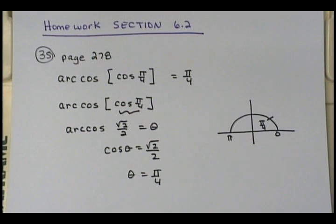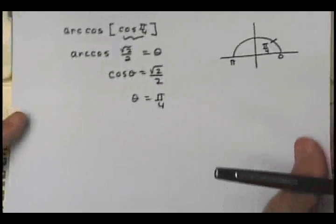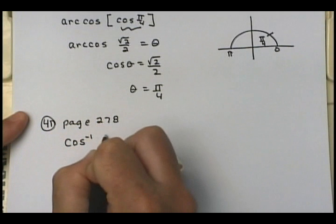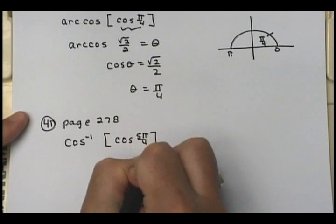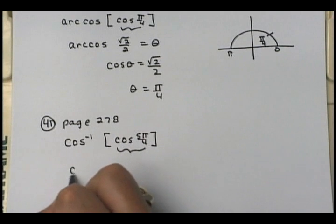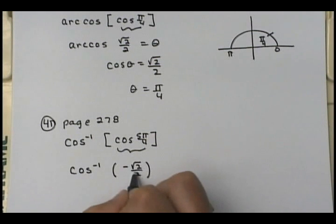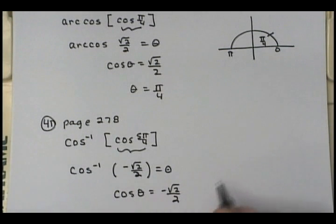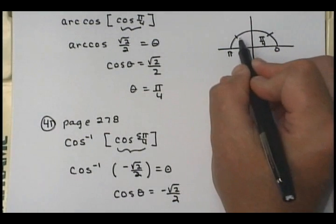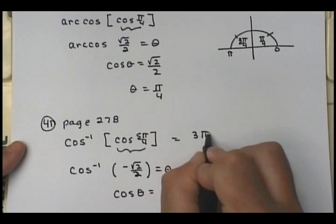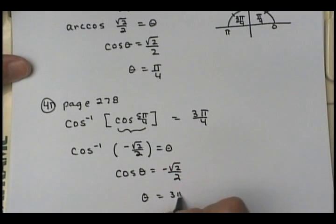Now look at problem number 41 — this is a good example of one where you need to think. You've got the inverse cosine of cosine at five pi fourths. What is cosine at five pi fourths? Negative square root of two over two. So if I let this equal theta, cosine theta equals negative square root of two over two. Between zero and pi, where does cosine equal negative square root of two over two? It's not at pi fourths — it's at three pi fourths. So theta equals three pi fourths.